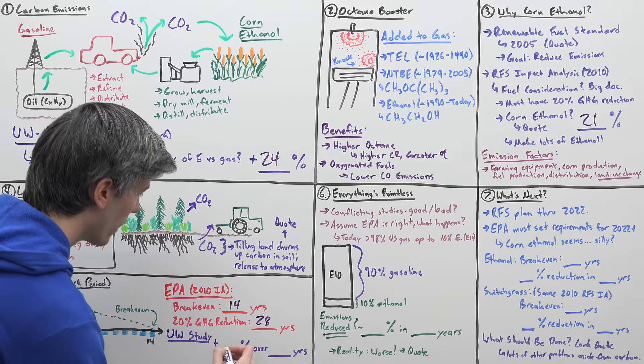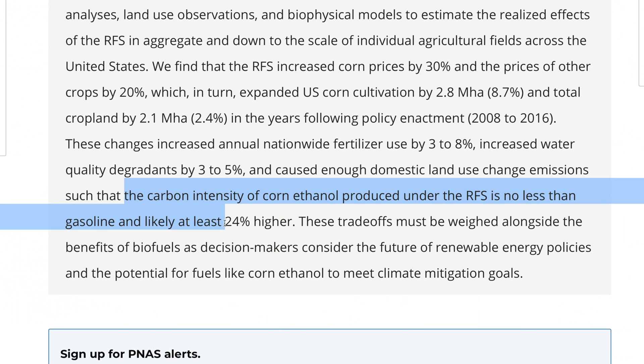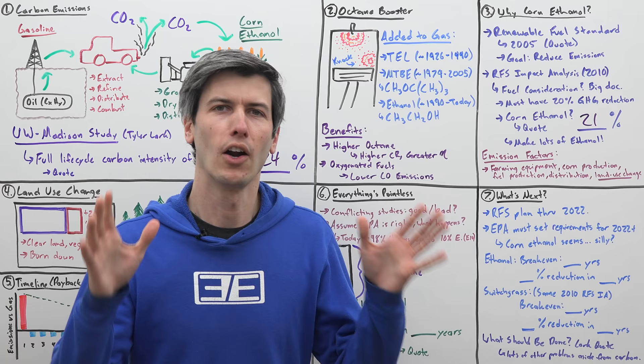Now, this University of Wisconsin study is saying in reality, what's more likely is that you're going to have a net increase of 24% emissions over the next 30 years. So they use 30 years as the baseline for, hey, what will the net emissions be over that duration? All right, so let's start to form a conclusion here.